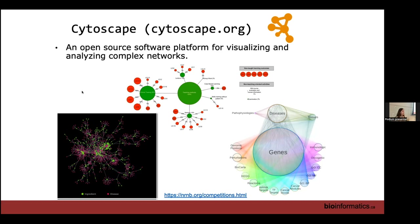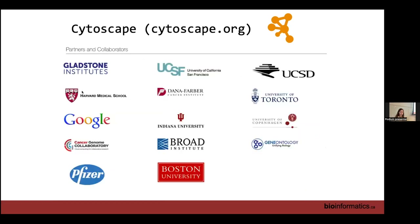Even trying to automate as much of the process as possible, making those perfect beautiful figures takes a lot of time. You don't have to be in the biological sphere to work with Cytoscape. One popular use is publication networks — there's an app called the Social Network app that grabs your publication records and creates a publication network for your lab. So there are many different uses of Cytoscape beyond pathway network analysis.